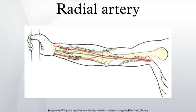The radial artery is used for coronary artery bypass grafting and is growing in popularity among cardiac surgeons. It has been shown to have a superior perioperative and postoperative course when compared to saphenous vein grafts.